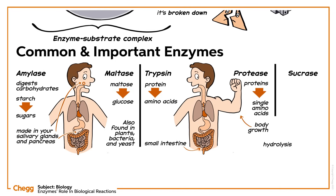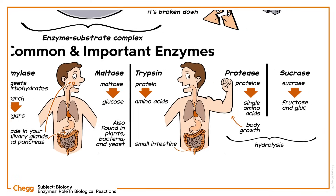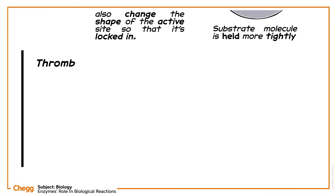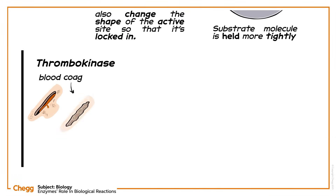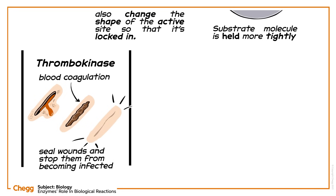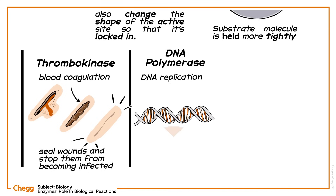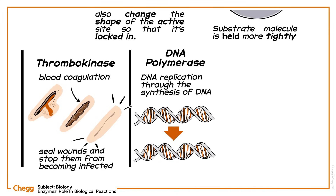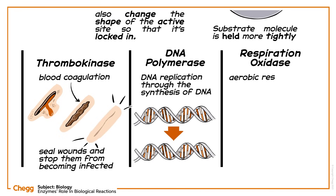Sucrase catalyzes the reactions that hydrolyze sucrose to yield the formation of fructose and glucose. Thrombokinase helps with the process of blood coagulation, helping to seal wounds and stop them from becoming infected. DNA polymerase is crucial to the process of DNA replication through the synthesis of DNA. And last but not least, respiration oxidase helps with the process of aerobic respiration by catalyzing the reduction of oxygen, which helps to generate an electrochemical gradient useful for other cellular processes.